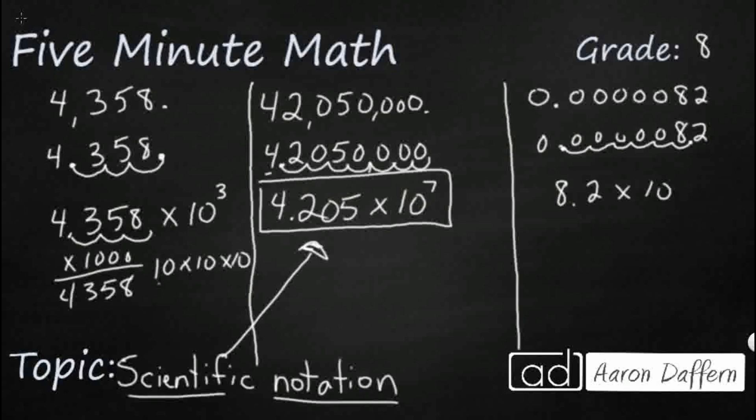We're going to write 8.2 still times 10. That's your scientific notation. We moved six times but we moved to the left, which means the exponent is negative six. And so that's how you would write 82 ten millionths.